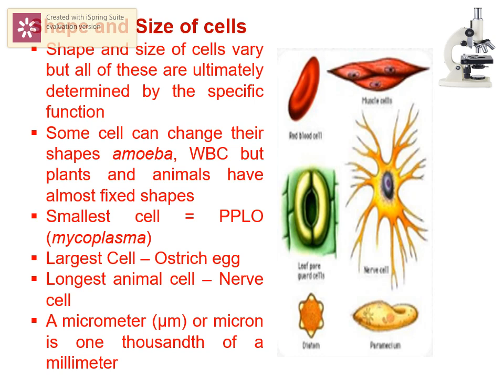The smallest cell is PPLO — that is, pleuro-pneumonia-like organisms, also known as mycoplasma. The largest cell is the ostrich egg. The longest animal cell is the nerve cell.